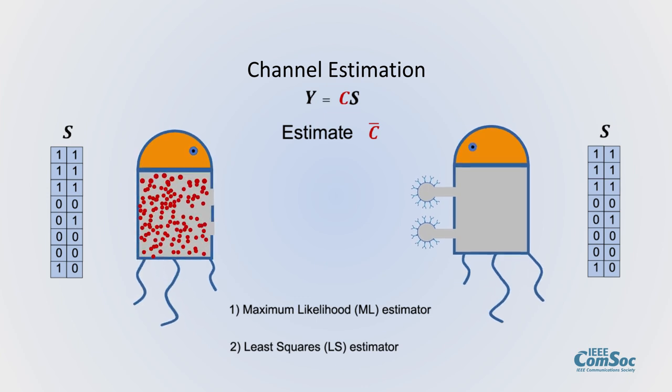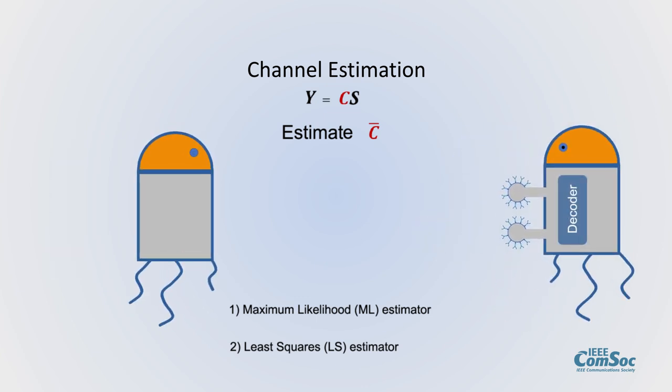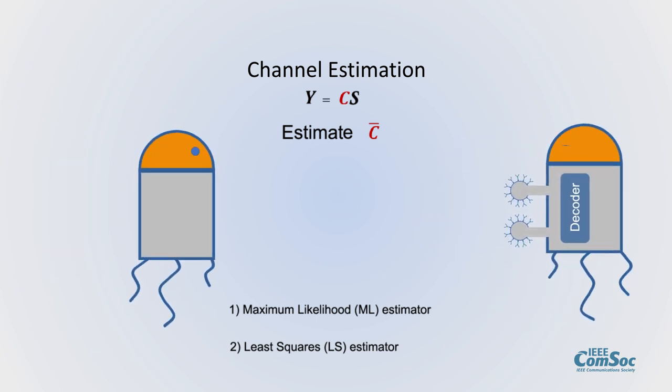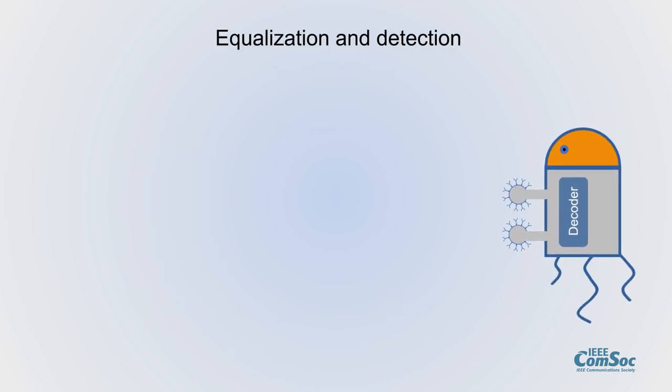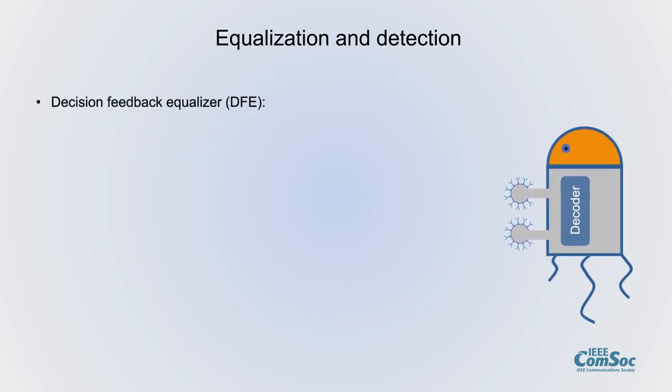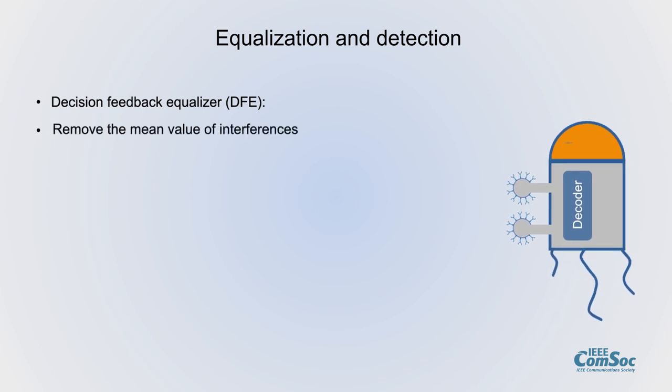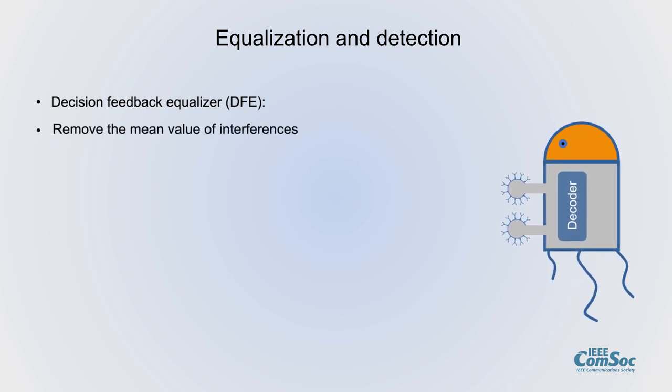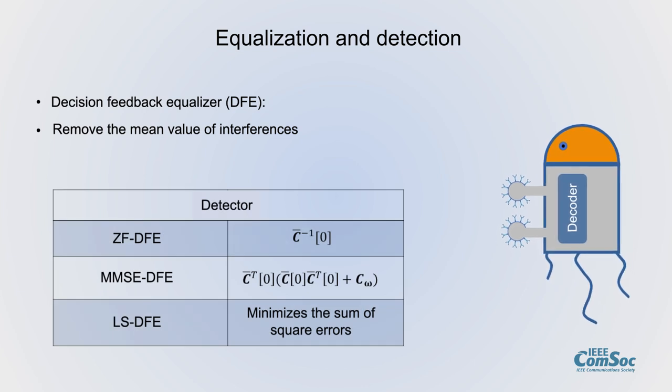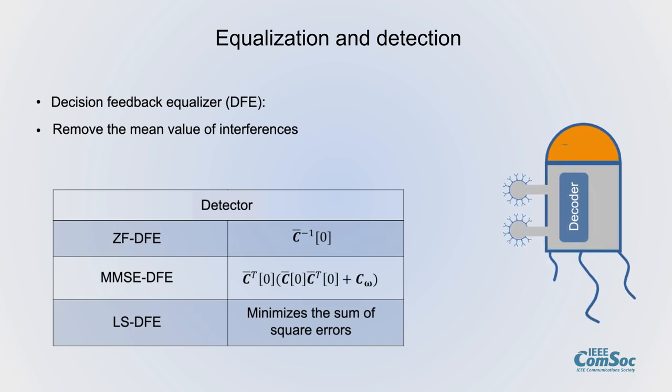Then the receiver uses the estimated channel matrix for equalization and detection. We propose a decision feedback equalizer to remove the mean value of interferences and pair it with three different filters as detection units.